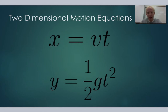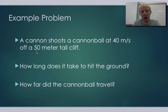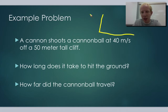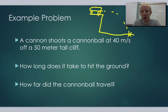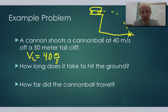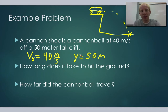Let's try a sample problem. A cannon shoots a cannonball at 40 meters per second off a 50-meter tall cliff. We want to know two things: how long does it take to hit the ground, and how far did the cannonball travel? We have a cliff with a cannon at the top shooting something out. We know the velocity is 40 meters per second in the x direction, and the cliff is 50 meters tall. We can treat each of these separately for solving the two parts.